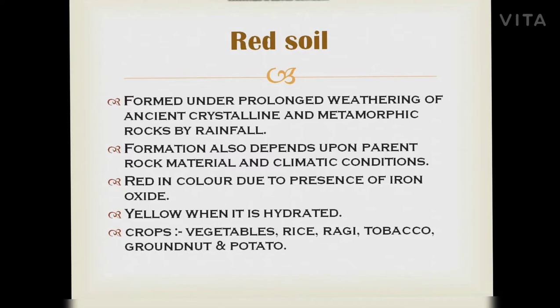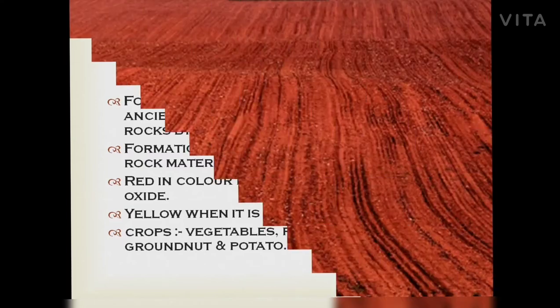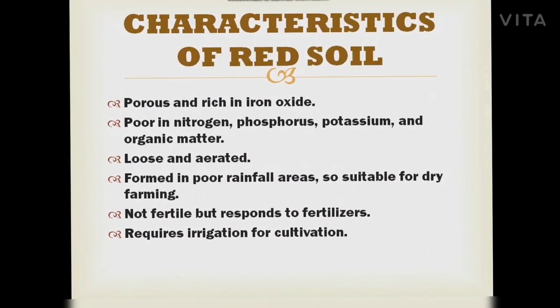Red soil is formed by the prolonged weathering of ancient crystalline and metamorphic rocks. Its formation also depends on parent rock material and climatic conditions. It is red in color due to the presence of iron oxide, and turns yellow when hydrated. It is rich in iron oxide and is porous, but poor in nitrogen, phosphorus, potassium, and organic matter. Crops grown include vegetables, rice, ragi, tobacco, groundnut, and potato.